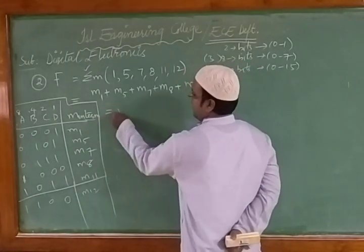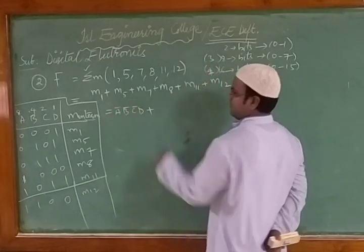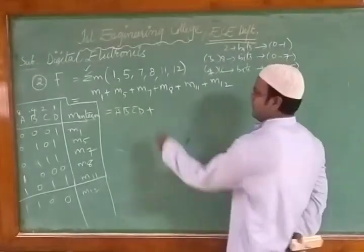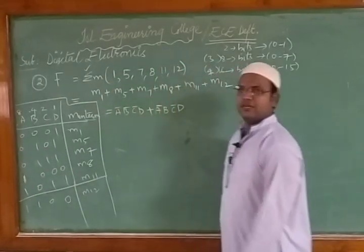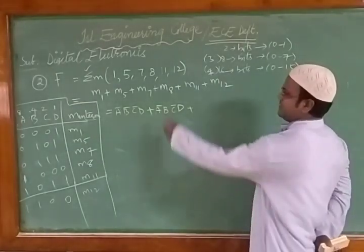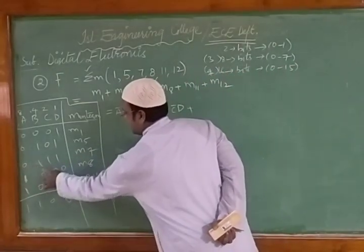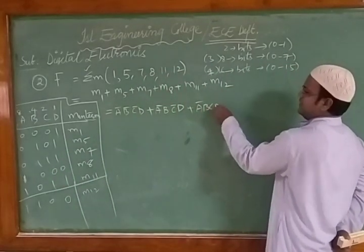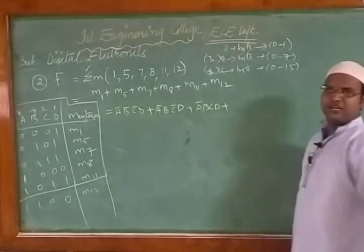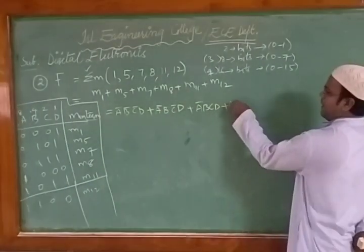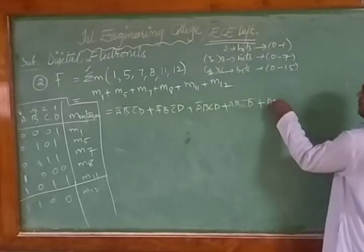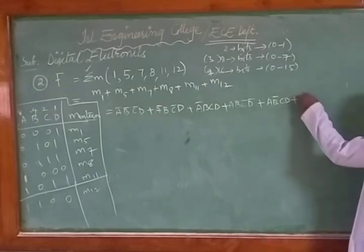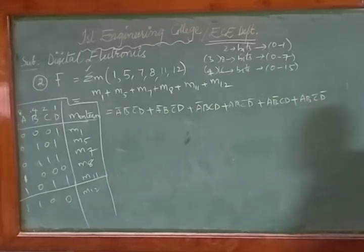Writing each minterm as a product of literals — where 0 indicates complement and 1 indicates the variable as-is: m1 = ā b̄ c̄ d; m5 = ā b c̄ d; m7 = ā b c d; m8 = a b̄ c̄ d̄; m11 = a b̄ c d; m12 = a b c̄ d̄. These are all the minterm literals written out.